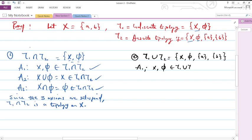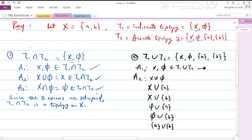Check the first axiom: X and empty set belong to T₁ ∪ T₂, so that's satisfied. Second axiom, which is the union: X ∪ ∅ gives us X. X ∪ {a} gives us X. X ∪ {b} gives us X.